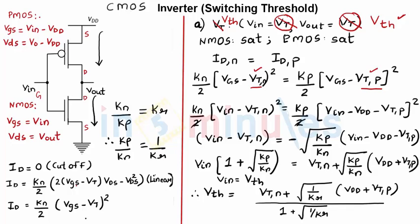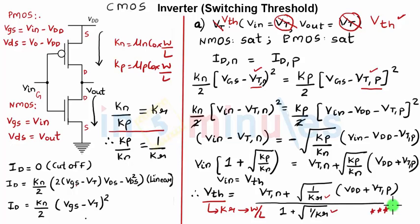This expression is dependent on KR where KR is nothing but KN by KP and KN is nothing but mu n cox W by L for NMOS and KP is nothing but mu p cox W by L for PMOS, which clearly shows that my switching threshold has a relation with KR which has a relation with W by L and W by L is nothing but a designing parameter which will keep on changing the value of my switching threshold on my voltage transfer characteristics. If you put some values of KR and identify the corresponding value of the switching threshold, you will come to know that as we keep on increasing the value of KR, my switching threshold keeps on reducing. This expression is going to be very important when we design CMOS inverters which you will see in the further clips. Hope you enjoyed and you have understood this clearly. Stay tuned, thank you.